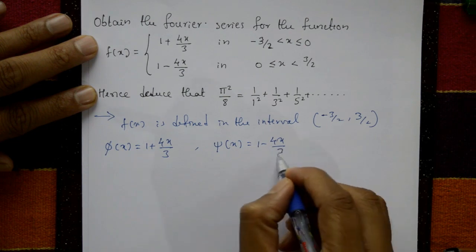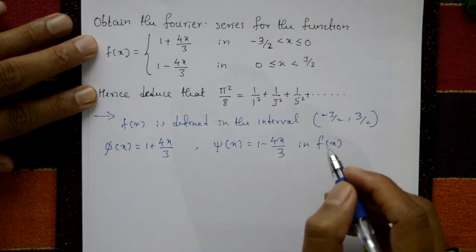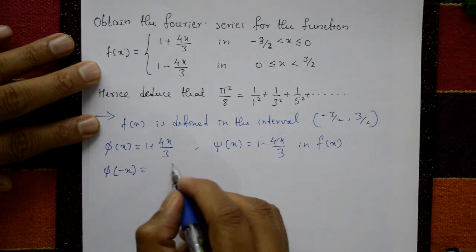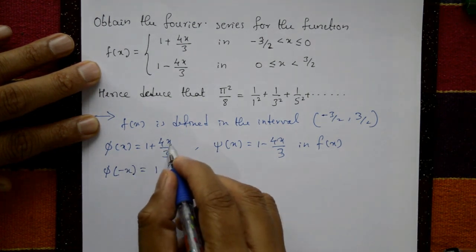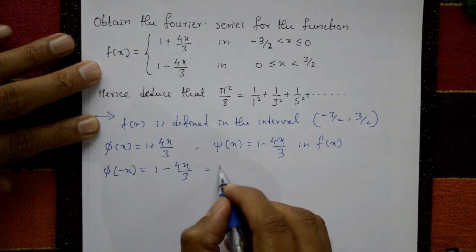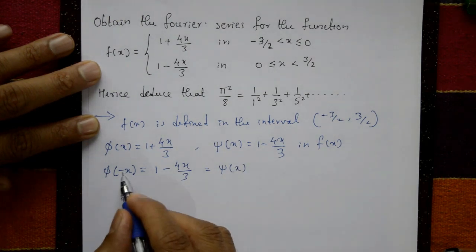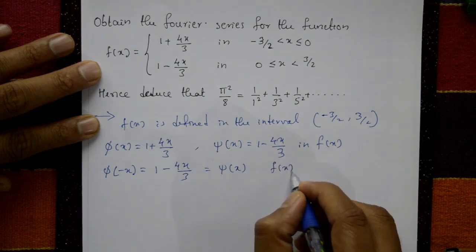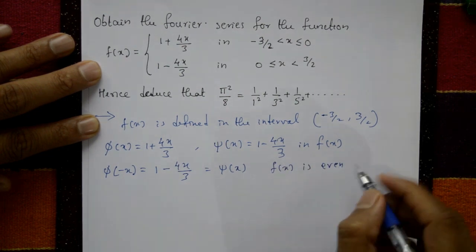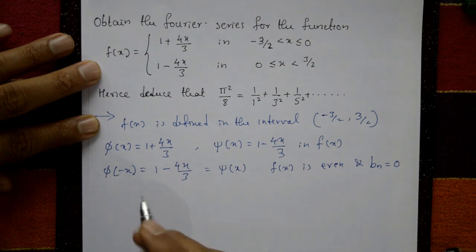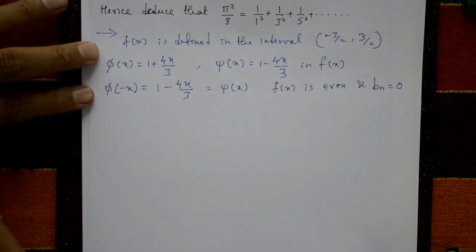Put x = -x: φ(-x) = 1 - 4x/3 = ψ(x). So φ(-x) = ψ(x), which means f(x) is an even function. Since it's an even function, bₙ = 0, and we only require a₀ and aₙ.